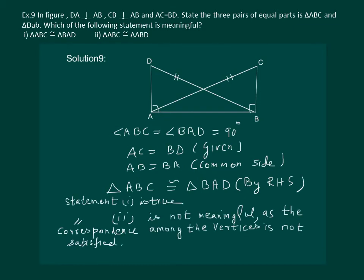Hence we will write that statement 1 is true while statement 2 is not meaningful as the correspondence among the vertices is not satisfied in the second statement. ABC is congruent to triangle ABD is not true.